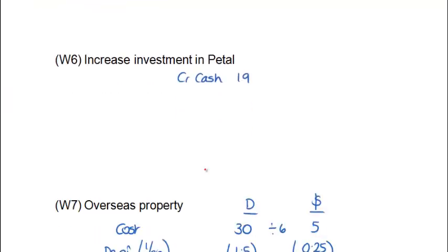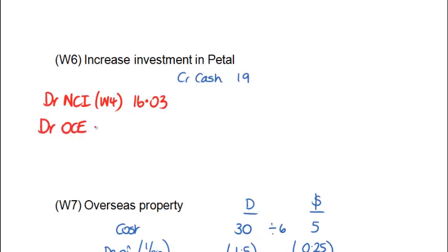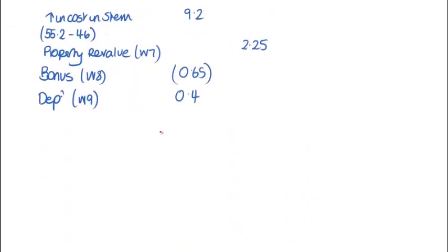I can also put that into working number 6, where we've got the increased investment in Petal before we bought the shares from the NCI. So I'm going to debit the NCI with that figure of 16.03, and therefore debit reserves — normally we take this to OCE — with the balancing figure of 2.97 million. Because that's a debit to OCE, when we get to working number 5 we're going to show this as a deduction. To our NCI adjustment from working number 6: 2.97 minus.